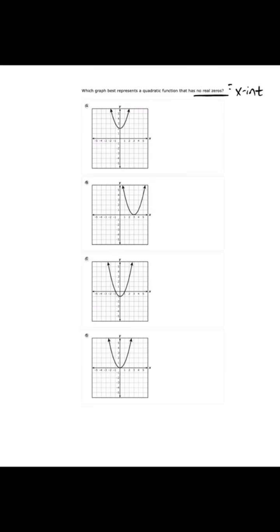So starting with letter A, we can see that the graph does not come close to touching or crossing the x-axis at all, right? So we know that it does not have any real zeros. It does not have any x-intercepts. So we're thinking that that's probably the right answer.